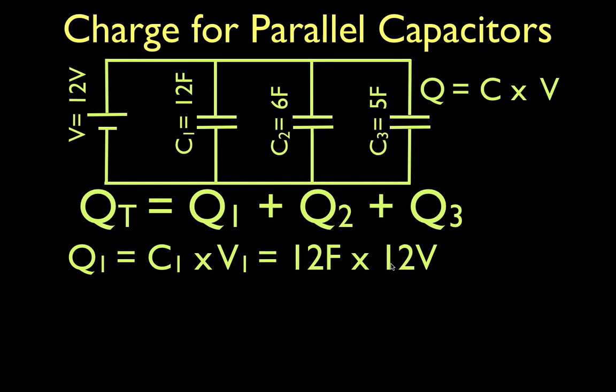the potential difference, the voltage across the capacitor, the voltage across the plates of that capacitor is equal to the voltage of the battery. That's the way it works for voltage for parallel capacitors. 12 times 12 is of course 144, so we have 144 coulombs that would be stored on capacitor number one.